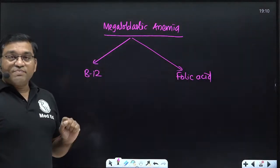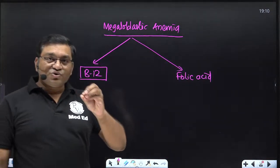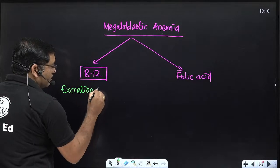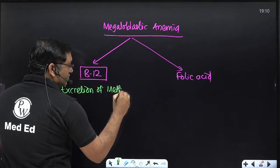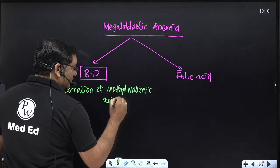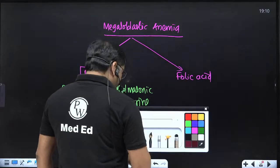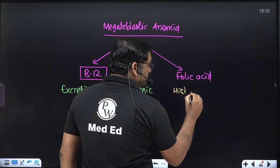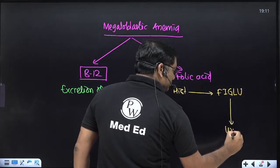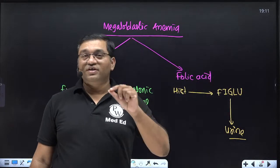To differentiate between B12 and folate deficiency: in B12 deficiency, megaloblastic anemia is associated with excretion of methylmalonic acid — methylmalonate — in urine. In folate deficiency, on the histidine load test, there is excretion of formiminoglutamic acid (FIGLU) in the urine when histidine is given. This FIGLU excretion is associated with folic acid deficiency.